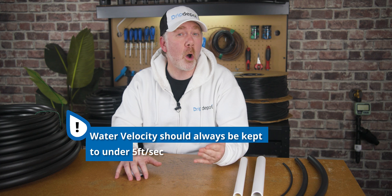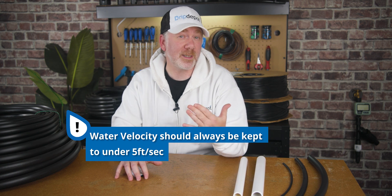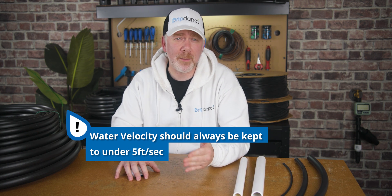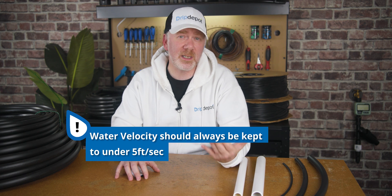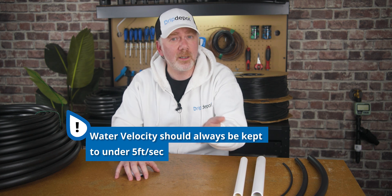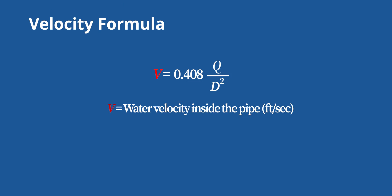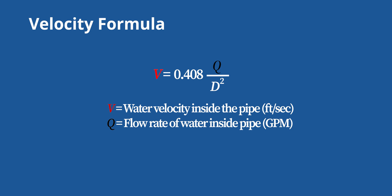Let's touch a bit on velocity. The general rule in the irrigation industry is that water velocity should always be kept under five feet per second. Higher than that and components can become damaged, particularly fittings like elbows and tees, and important components like valves. Unlike friction loss, we don't need to know the linear length of our line to determine velocity. On the screen now, and linked in the description, is the formula you can use to determine velocity. All you need to know is the flow rate in gallons per minute and the inside diameter of your tubing or pipe.